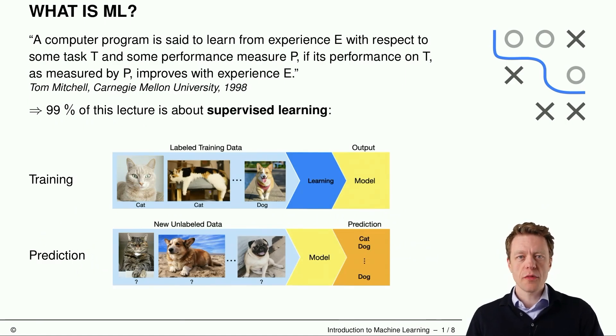Let's start out with the definition of machine learning as phrased by Tom Mitchell in the 1990s, which is, a computer program is said to learn from experience E with respect to some task T and some performance measure P if its performance on task T as measured by performance measure P improves with experience E. So we could also say we want to learn from experience.